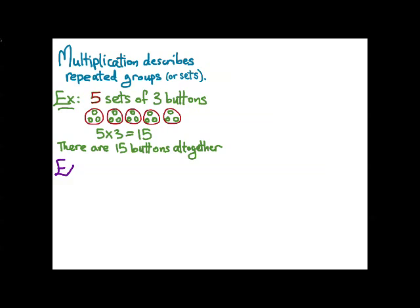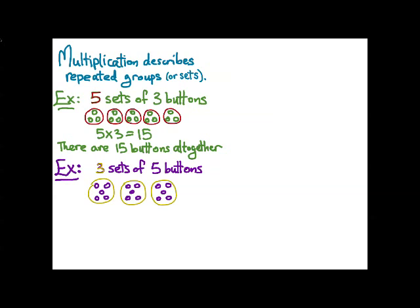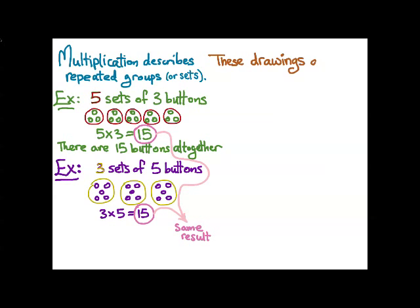Let's do a related but different example, three sets of five buttons. We can draw a picture that looks like this and here we see that 3 times 5 equals 15. And we can notice that in both of these cases we get the same result. But these drawings don't really make it very obvious why 5 times 3 should be equal to 3 times 5. It's easy enough to check when the numbers are small like this, but if we were using huge numbers, it might not be so obvious.